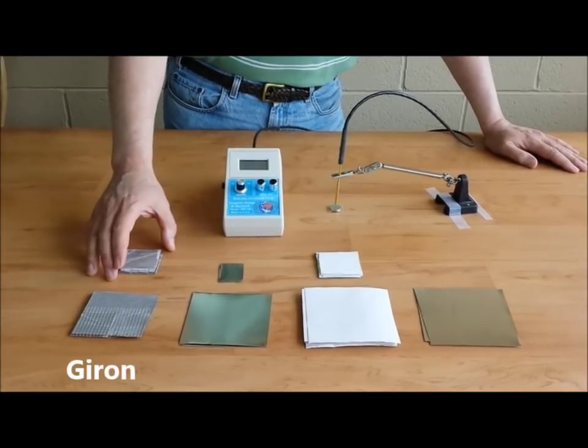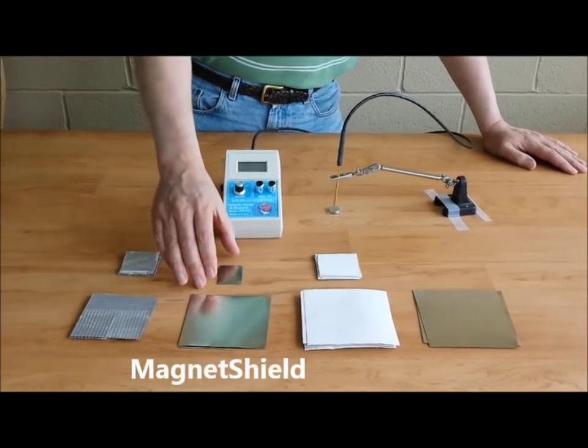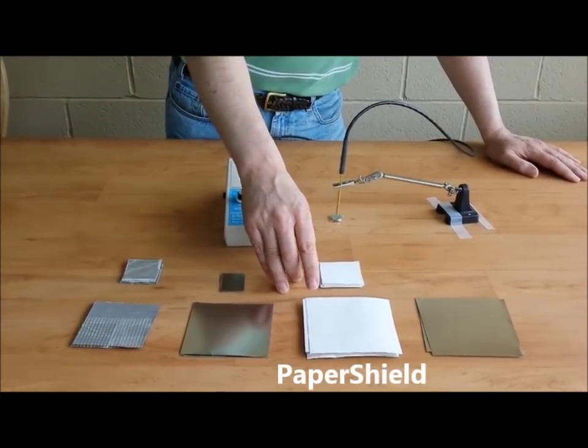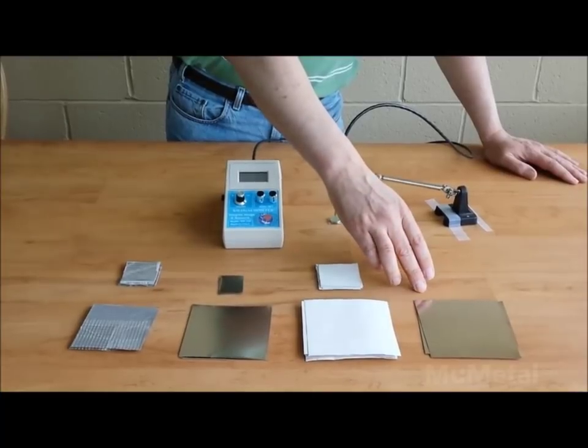This first material here is called Gyron. This one here is magnet shield. This one with the white paper on it is called paper shield. And this last one is mu metal.